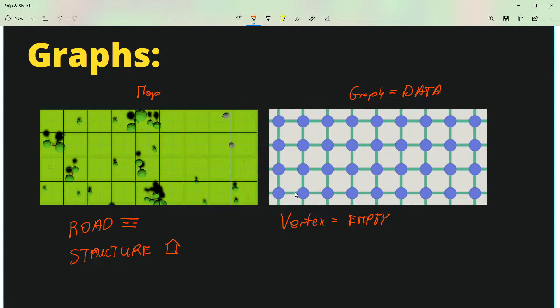Now, here comes the fun part. As the data for each vertex, we are storing the type. So we have the type empty, we have type structure, and we have type road. So I'm going to write them on the graph as E for empty. I'm not going to write on each and every vertex that is empty, let's assume that this is the default. And S for structure and R for road.